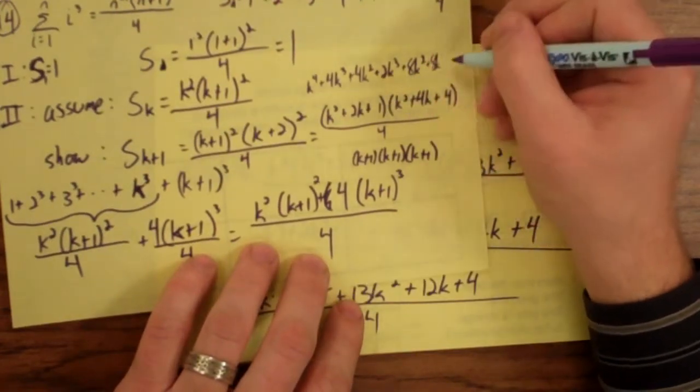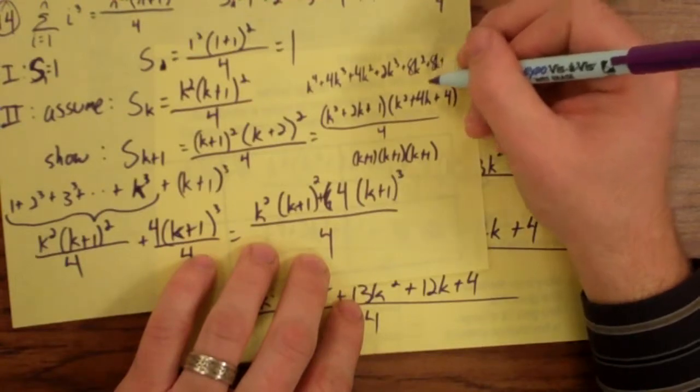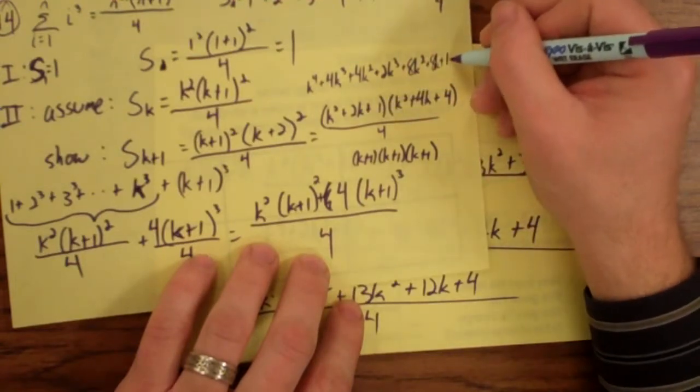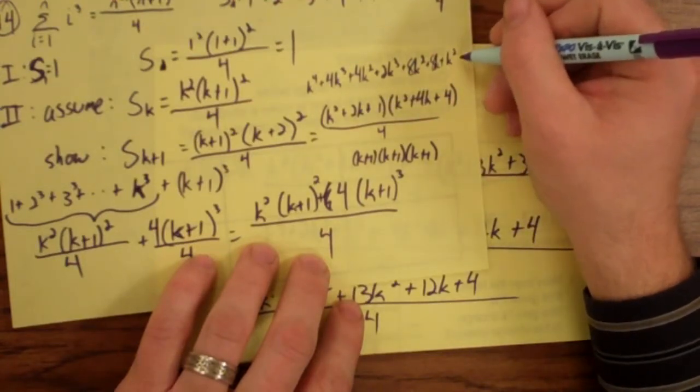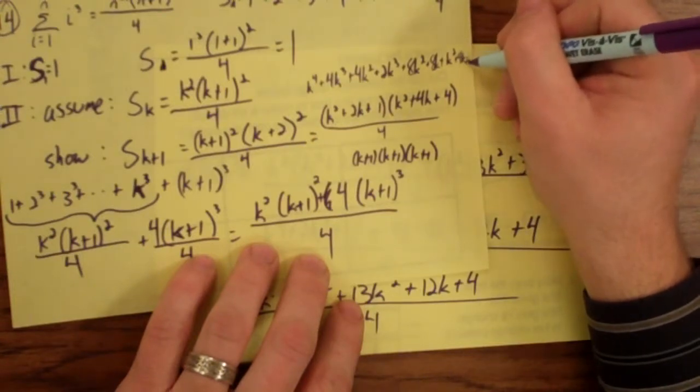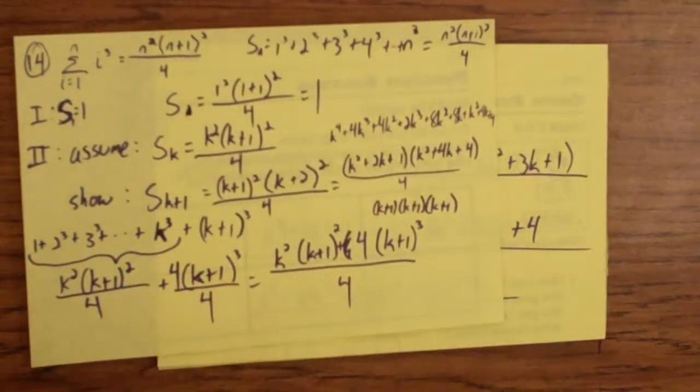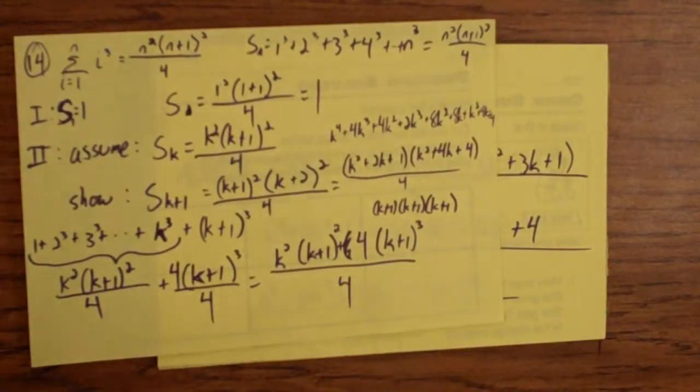And then the last one we get 1 times all of these. 1 times k squared is k squared. 1 times 4k is 4k. And then the last thing would be plus 4. I'm just going to switch to a different color.